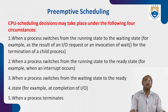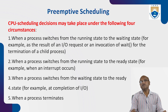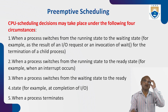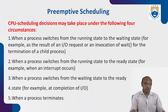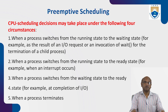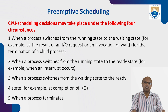CPU scheduling decisions may take place under four circumstances: (1) when a process switches from the running state to the waiting state — for example, as a result of an I/O request or invocation of wait for termination of a child process; (2) when a process switches from the running state to the ready state — for example, when an interrupt occurs; (3) when a process switches from the waiting state to the ready state; (4) when a process terminates. These are the conditions under which preemptive scheduling comes into action.